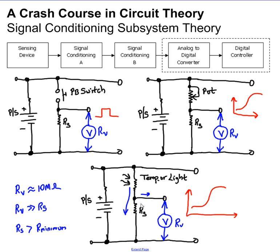There are limitations and rules that you must follow when you try to connect a circuit to the microcontroller as an input. One of those is loading. The microcontroller is a voltmeter and it has an internal resistance — I call it RV, which means R voltmeter. There is a relationship between these two resistors that must be adhered to: the resistance of the voltmeter should be much much greater than the resistance connected to the voltmeter, otherwise the voltmeter will not record the value properly.